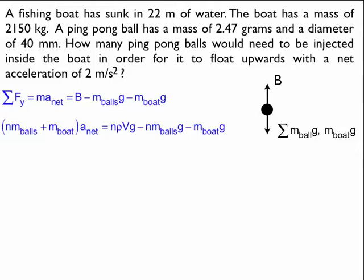And that's equal to the buoyant force of each ping pong ball. So n is the number of ping pong balls and rho vg is the buoyant force for each ping pong ball, each single ping pong ball, minus the weight of all the ping pong balls. So again, n is the number of ping pong balls times mg for every ping pong ball, and that's minus the weight of the boat.